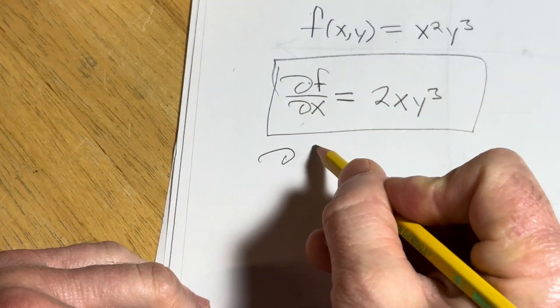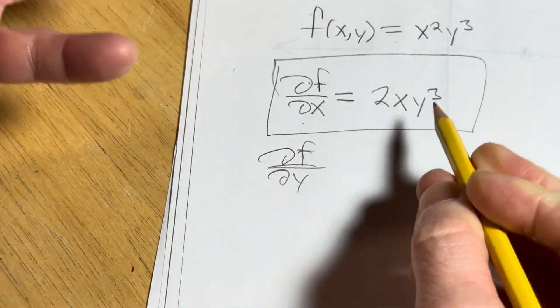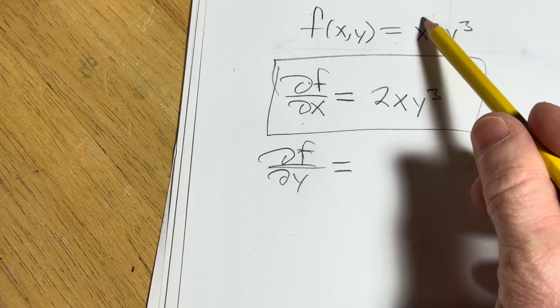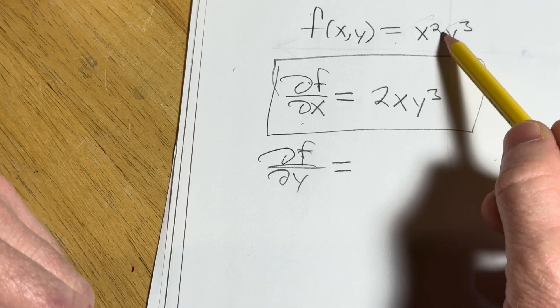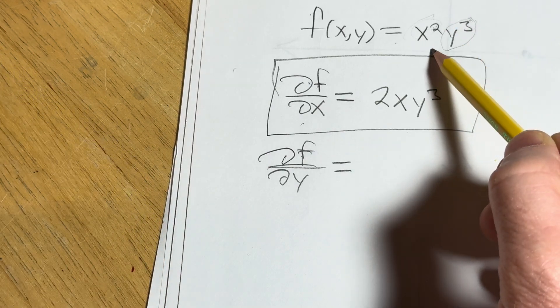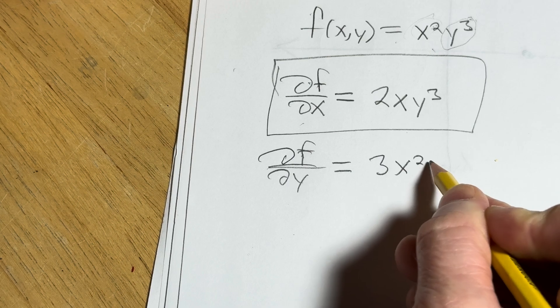And now we can find del f, del y, the partial derivative of f with respect to y, or with respect to the second variable. Same thing here, except this time we treat x squared as a constant. So it hangs out. So taking the derivative of y cubed with respect to y, you bring down the 3, subtract 1 from the exponent. So it'll be 3x squared, y squared.